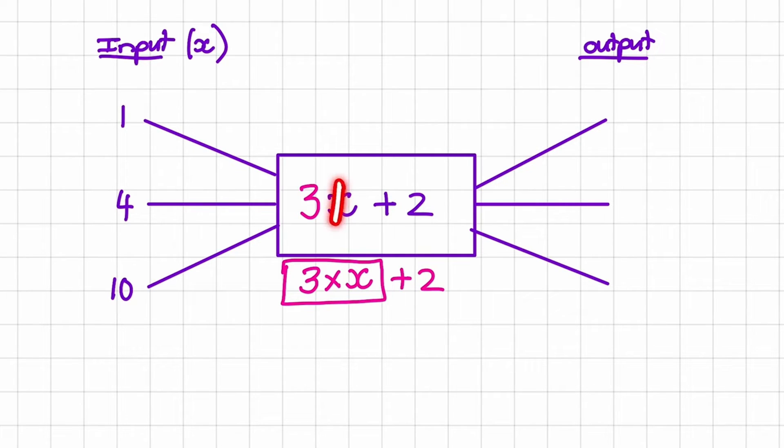So let us take 1 and put it in the place of x. So notice it's not 31 plus 2. It is 3 times 1 plus 2 and that is equal to 5. Next we have 4. So it's not 34 plus 2 but it's rather 3 times 4 which is 12 plus 2 which is 14.